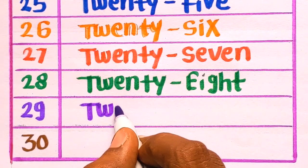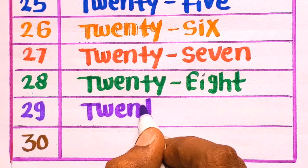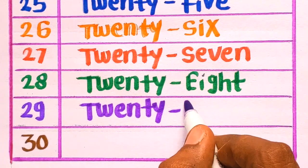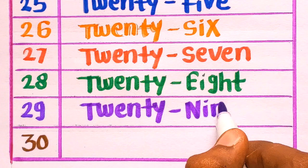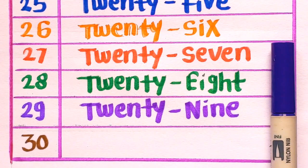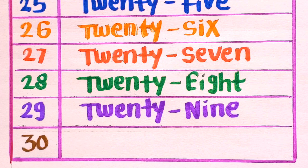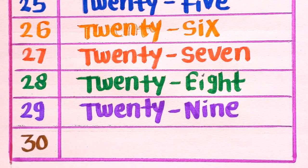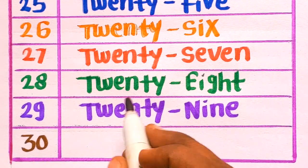T-W-E-N-T-Y-29. N-I-N-E-29, with the violet color. And after number 29, next is 3-0-30.